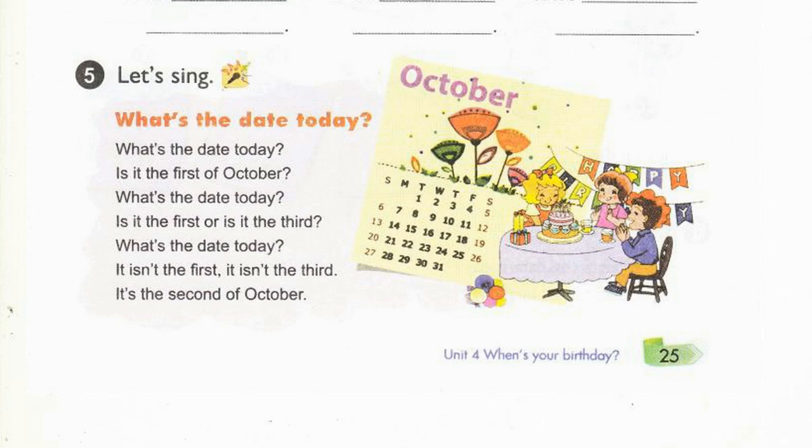What's the date today? Is it the 1st of October? What's the date today? Is it the 1st or is it the 3rd? What's the date today? It isn't the 1st. It isn't the 3rd. It's the 2nd of October.